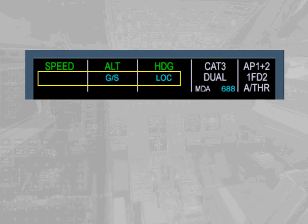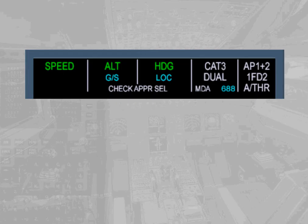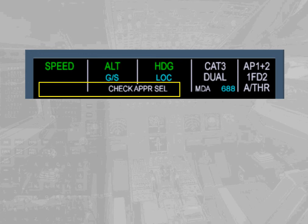The second line shows armed modes for the flight guidance system. In the example shown, GS and LOC in blue indicate that glide slope and localizer capture modes are armed. The third line shows reminders or messages. In our example, 'check approach' advises us to check the consistency of the selected approach. Note: some messages are spread over two columns.